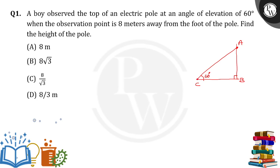The observation point, the boy, is standing 8 meters away from the foot of the pole. So from point B to C, the distance is 8 meters.